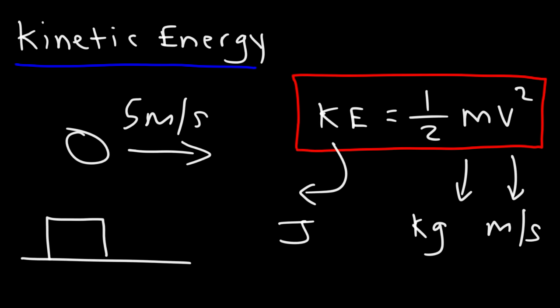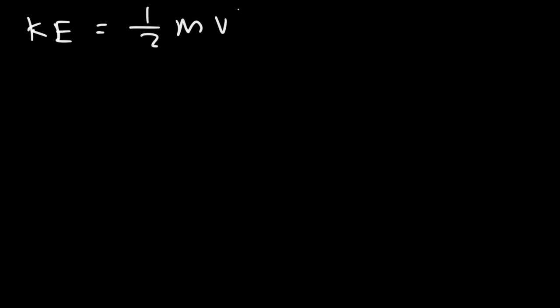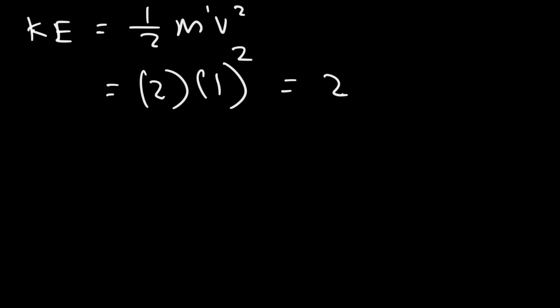A typical question you might see on a physics exam would be: if you double the mass of an object that's moving, what happens to the kinetic energy? And what if you double the speed? Let's rewrite the formula: KE equals 1 half mv squared. Notice that m is raised to the first power. If we double the mass, the kinetic energy will double. Replace everything with 1 except what's changing — replace m with 2, keep speed as 1. This gives us 2, so kinetic energy doubles.